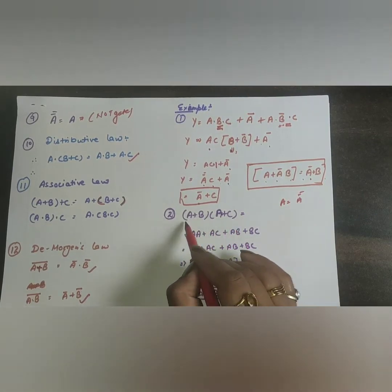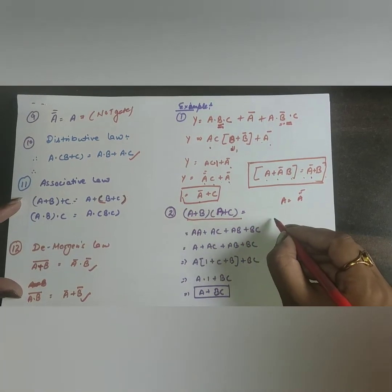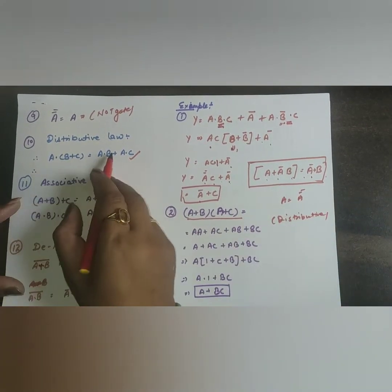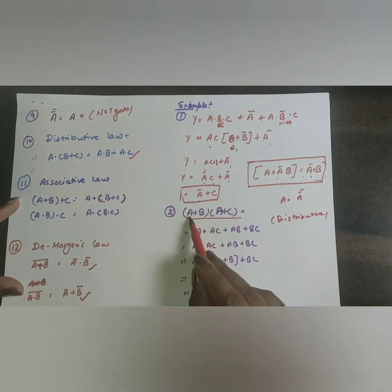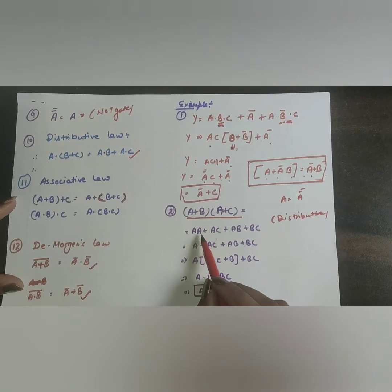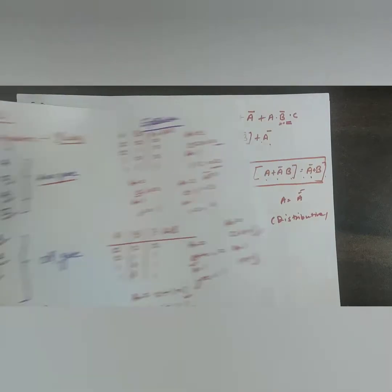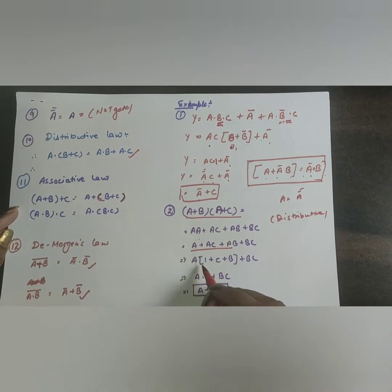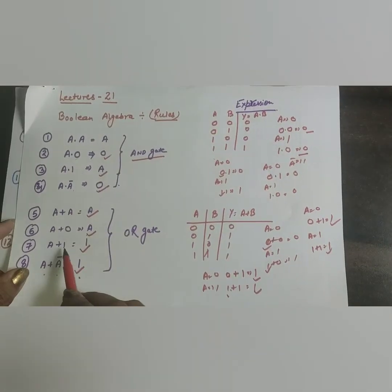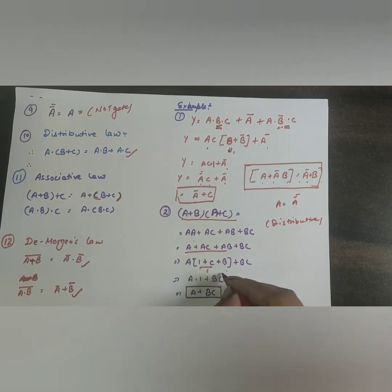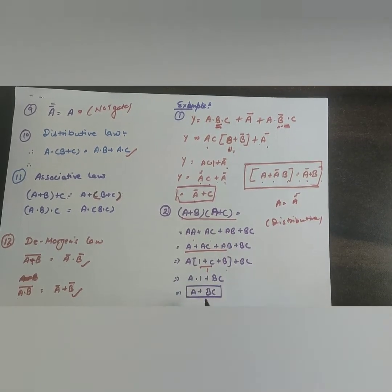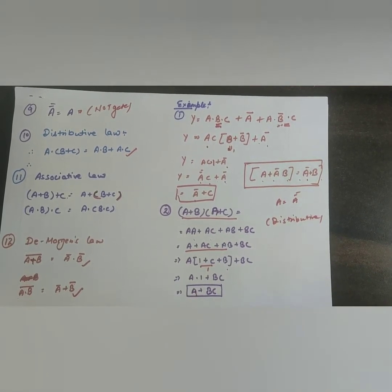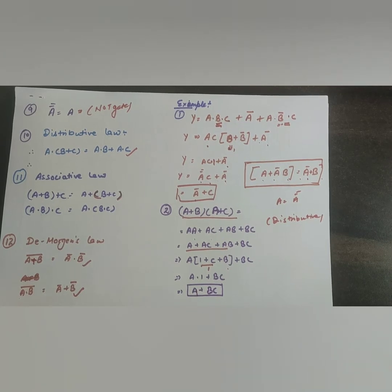Example 2: Prove (A+B)(A+C) = A+BC. Using the distributive law: A·A + A·C + A·B + B·C. Since A·A = A, we get A + AC + AB + BC. Factor A from the first three terms: A(1+C+B) + BC. Since 1+anything=1, this gives A·1 + BC = A + BC. Proved.